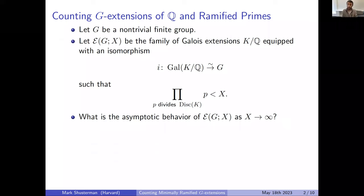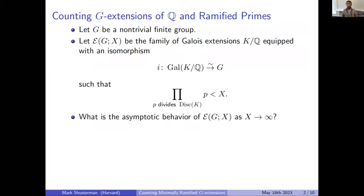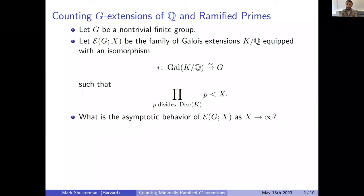In particular, there are conjectures of Malle that are valid for basically any group G, but these conjectures are far from being established. Even though this problem is very difficult, what I'd like to do today is suggest looking at an even more difficult problem: counting not all extensions, but only those extensions that are ramified at the smallest possible number of primes.